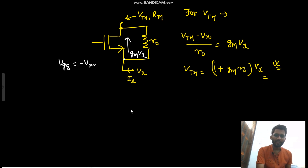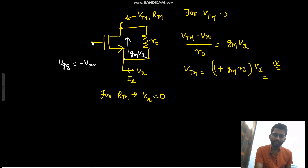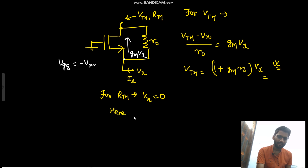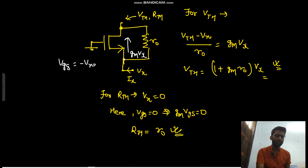For Rth, we short-circuit Vx, so Vx = 0. With Vx shorted, Vgs = 0, so gm·Vgs = 0 — no current flows through the MOSFET. Looking from the output terminal to ground, only R_naught is present. Therefore Rth = R_naught.